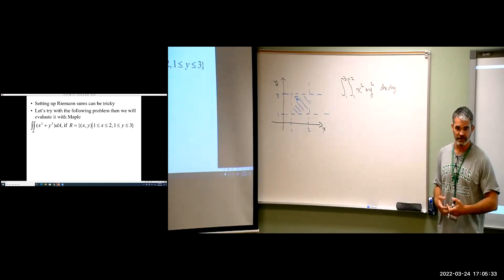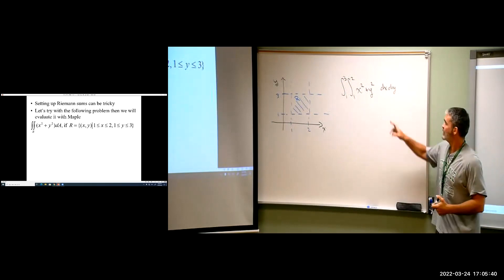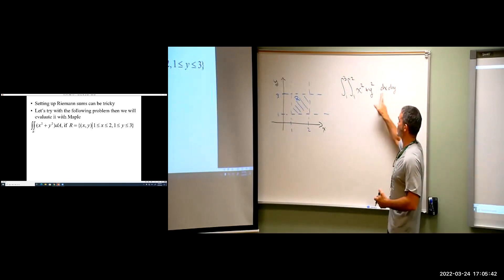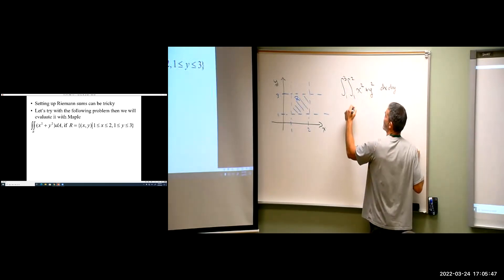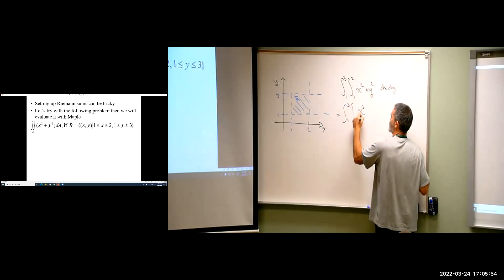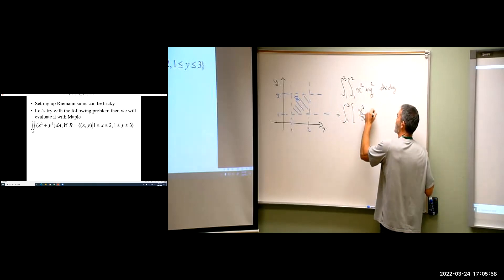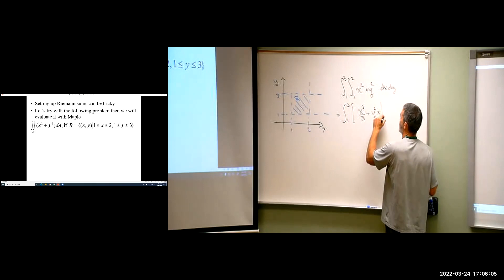And then we would calculate this. Now, this goes exactly the same way that the partial derivatives did, just the other direction. So if I'm integrating with respect to X, Y is a constant. So my antiderivative would be, now we're not doing Y yet. So we're going to have X cubed over 3 plus Y squared times X. Because remember, Y is a constant, so Y squared is a constant. And then that's going from 1 to 2.